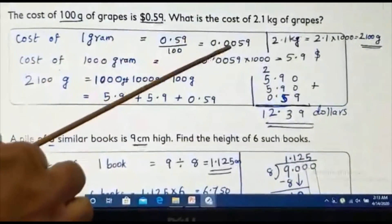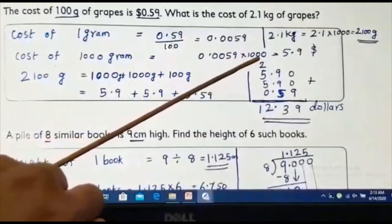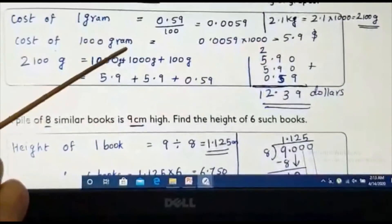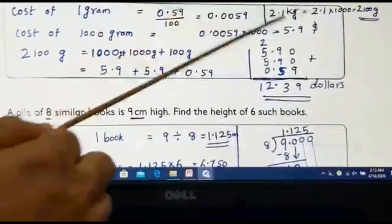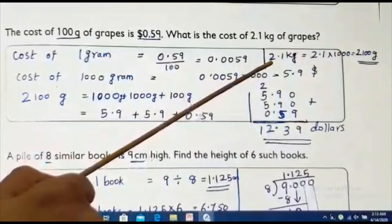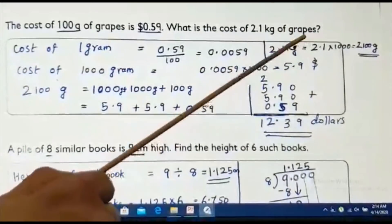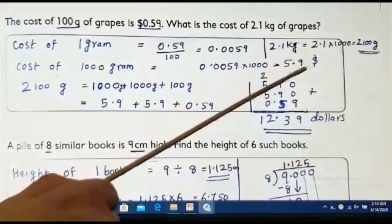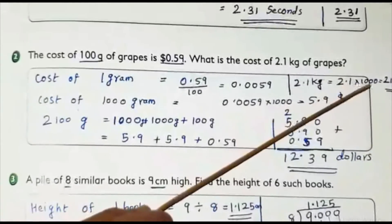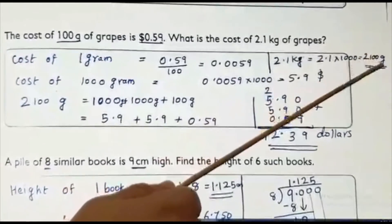That means how many times it need to move? 1, 2, 3. It becomes 5.9. Now, you know 2.1 kg means how many grams? 1 kg means 1000 grams. 2 kg means 2 into 1000 grams. 1.1 kg means 1.1 into 1000 grams. What is 2.1 kg? 2.1 multiply 1000. It will move 1, 2, 3. It is 2100 grams.